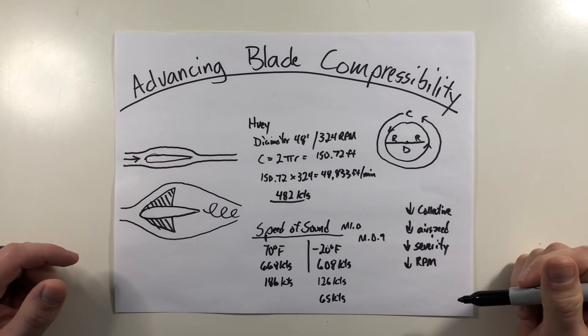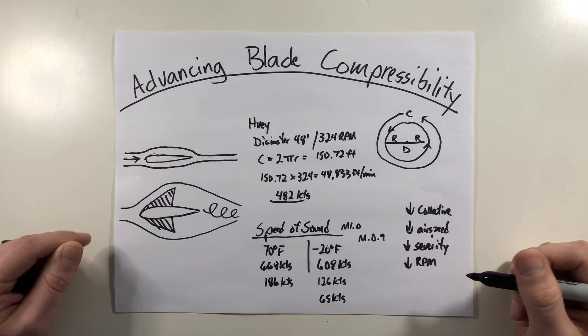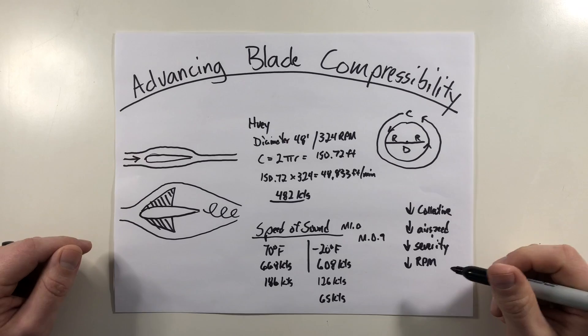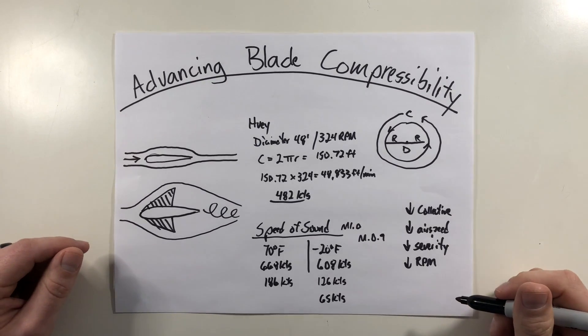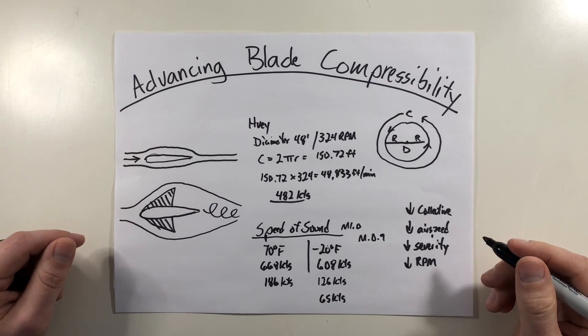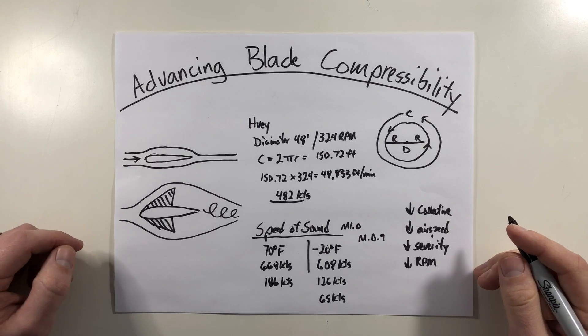But that's all I have for this video. Simply put, advancing blade compressibility occurs at high speed, low temperature flight, where the advancing blade reaches a Mach 1 or higher speed. Now be sure to hit like and subscribe below and leave a comment or question below as well. Thanks for watching. I'm Jacob. This is Helicopter Lessons in 10 Minutes or Less. As always, safe flying.